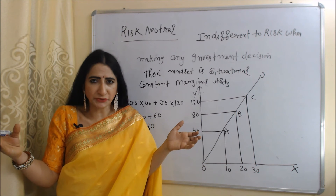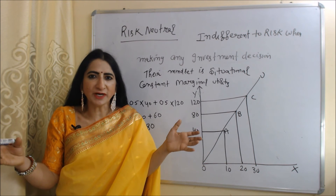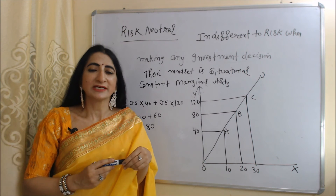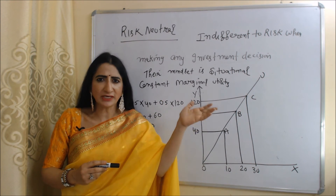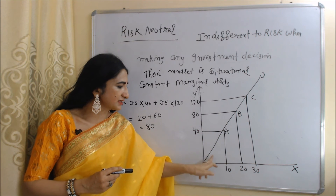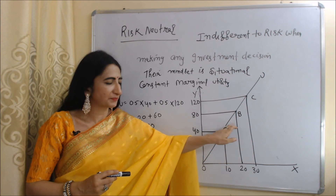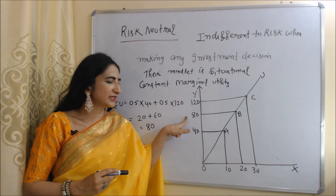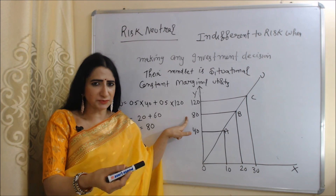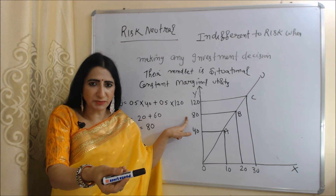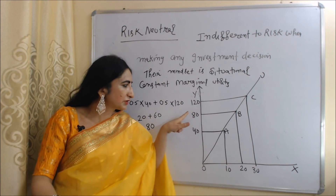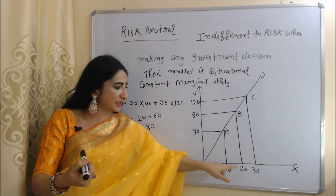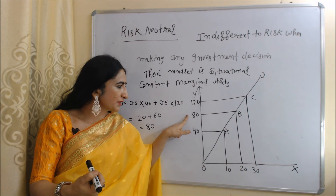Now we discuss risk neutral individuals. Risk neutral people are indifferent to risk — they neither focus on marginal gain nor on marginal loss, so their marginal utility remains constant as income increases. The OU curve in this diagram shows constant marginal utility for risk neutral persons. The initial equilibrium point B has income of 20,000 and utility of 80. If they gain from the investment proposal, income rises to 30,000 and utility increases to 120. If they bear a loss, income falls to 10,000 and utility reduces to 40.